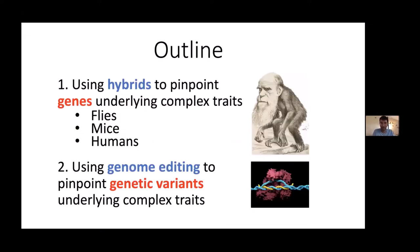Now I'll tell you about what we've been doing with this approach. In the first part of the talk I'll describe how we've been using hybrids to find the genes underlying complex traits, giving three brief stories in flies, mice, and humans. Then in the second part I'll tell you about how we've achieved even higher resolution by using genome editing to pinpoint the specific genetic variants underlying complex traits.